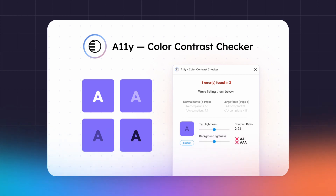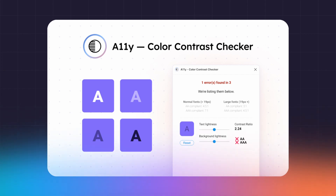Number 4: A11y Color Contrast Checker. A11y is a powerful Figma plugin that helps designers meet accessibility standards for text color contrast. This is crucial for creating inclusive designs that work for users with visual impairments. With A11y, you can easily check the contrast ratio between text and background colors. It will analyze all layers and text in your design and highlight any elements that fail to meet WCAG 2.1 AA and AAA color contrast requirements. For example, light gray text over a white background would likely fail accessibility standards. A11y quickly flags these issues so you can adjust the colors accordingly, and even suggests AA or AAA compliant colors to use instead, taking the guesswork out of picking accessible color palettes.